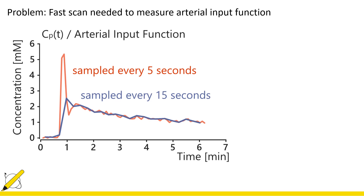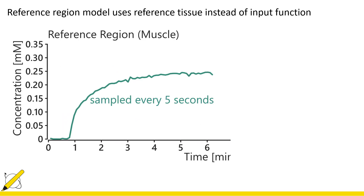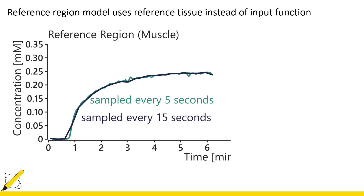The problem with using a faster scan is that it requires making sacrifices to image quality. So one alternative is to use the reference region model, which uses a reference tissue such as muscle instead of the input function. The advantage of using something like muscle is that even if the sampling rate is low, the curve shape itself does not substantially change.